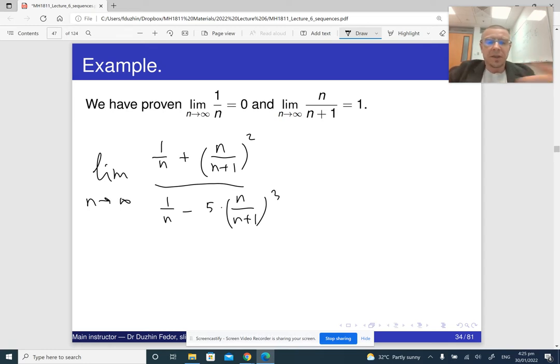So it just really means that with the two familiar limits, one over n and n over n plus one, we can replace them with their values. And that's going to be zero plus one squared divided by zero minus five times one squared, which is minus one.